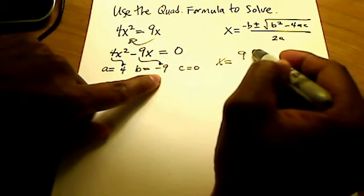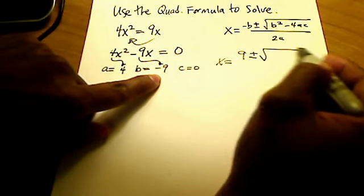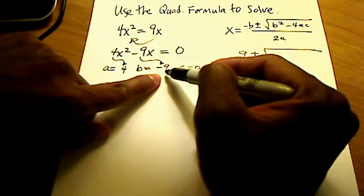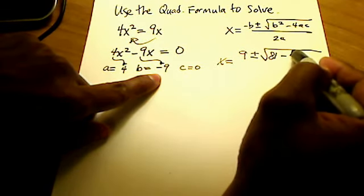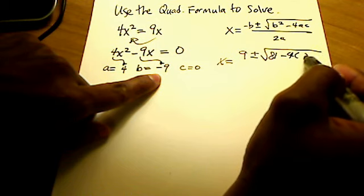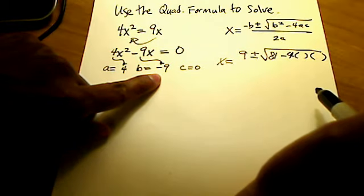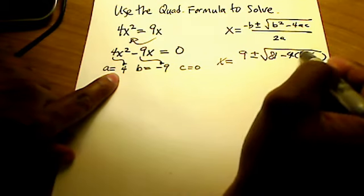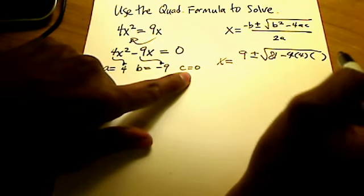So I've got positive 9 plus or minus the square root of b squared, so that's negative 9 times itself, which is 81, minus 4 times a couple of numbers. This is interesting because those numbers are 4, which is my a, and 0, which is my c.